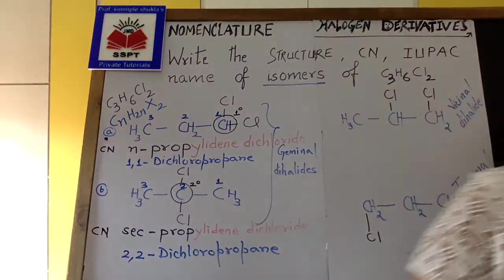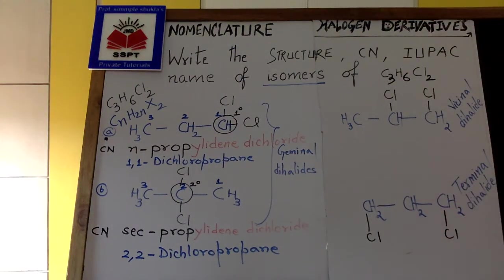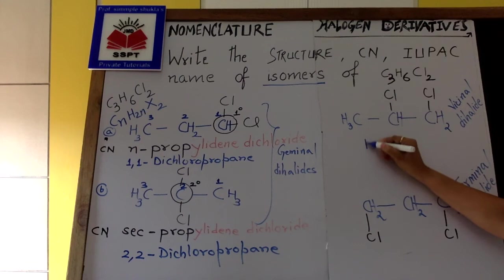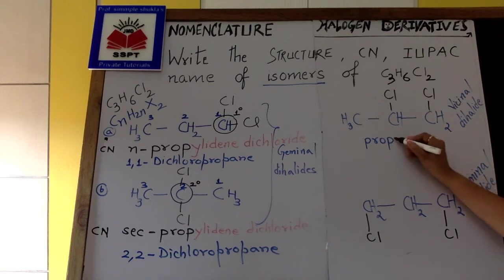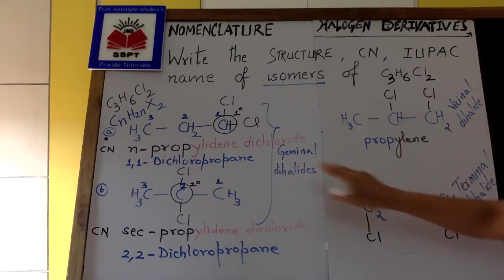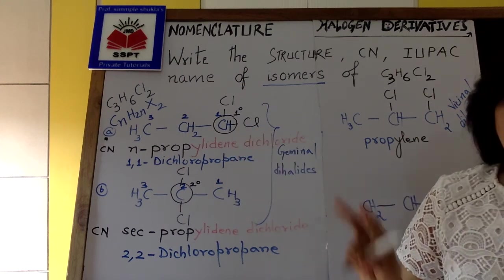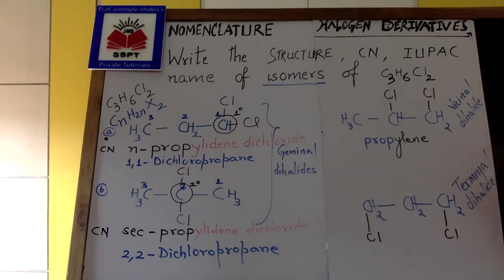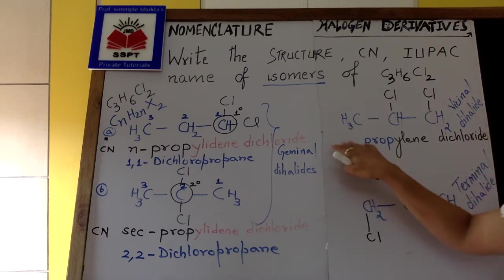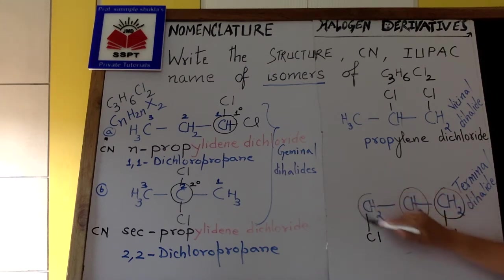Now, we go to the next one, which is over here. Number of carbons are three. So prop. The suffix is illidine. Geminal dihalide suffix is illidine. Dichloride suffix is illidine. So propylene dichloride. We don't use an iso over here. So next to your terminal dihalide, they are named as polymethylene dihalide.